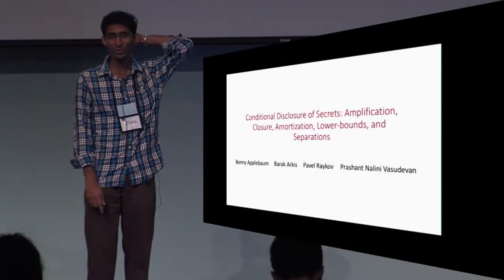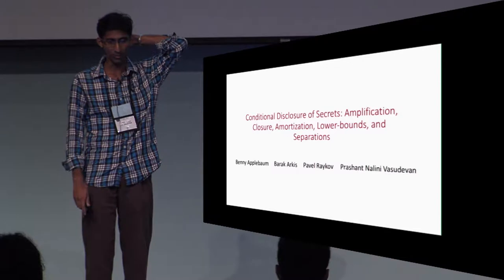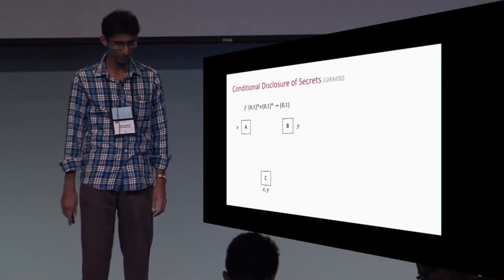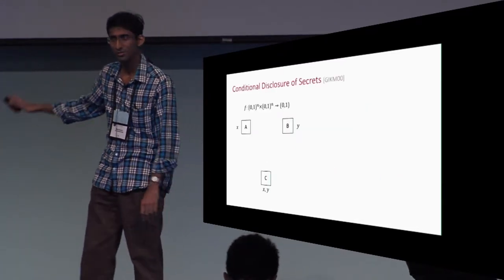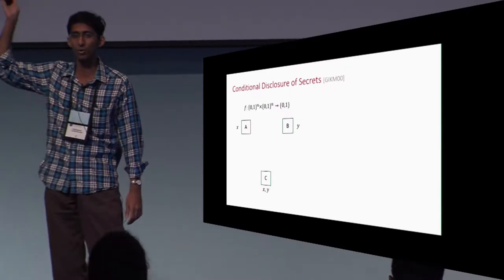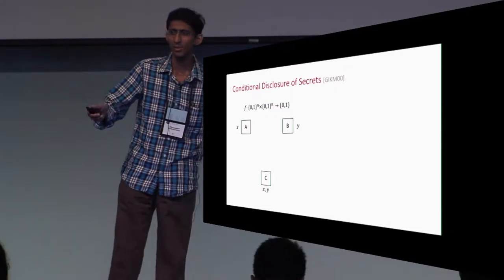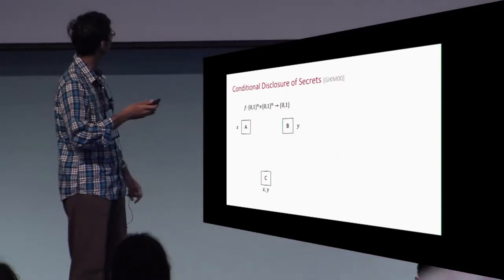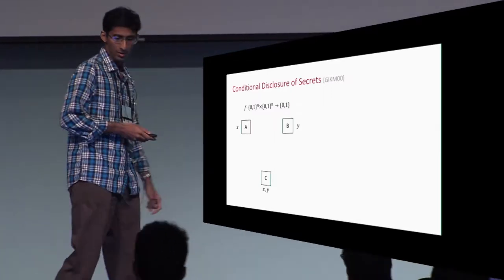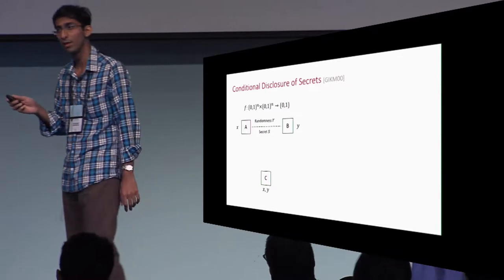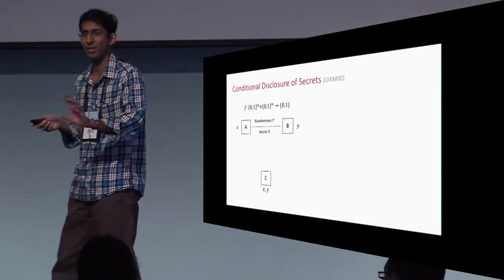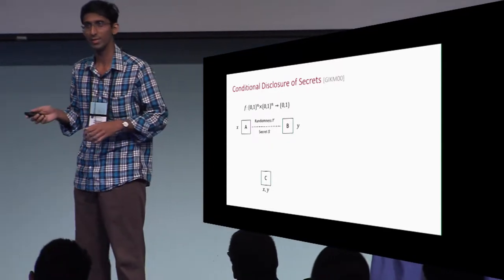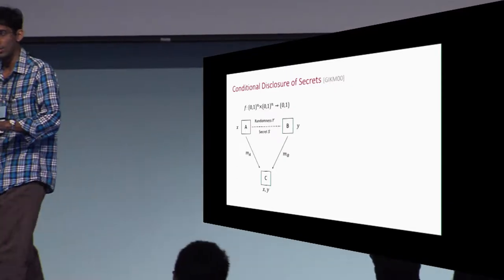I'm going to tell you about a bunch of results we have about this thing called the conditional disclosure of secrets. So this is the setting: you have a predicate f on two inputs — it's public, everyone knows this. And you have three parties: Alice, who knows x (one of the inputs to f), Bob, who knows y, and Carl, who knows both x and y. In addition, Alice and Bob have some shared randomness and a secret s — think of it as a single bit. They each compute one message based on whatever they know and send it to Carl. This is all that happens.